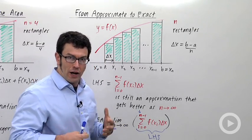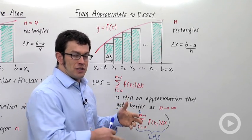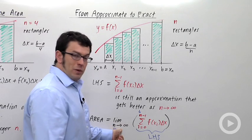It also happens to correspond to the number of rectangles. So we're using more and more rectangles. And if the value of the left-hand sum gets closer and closer to some limit, then that will be the value of my area.